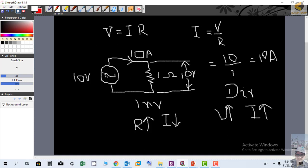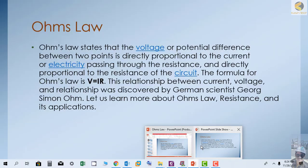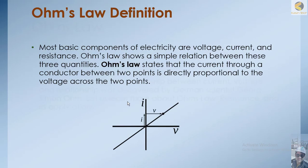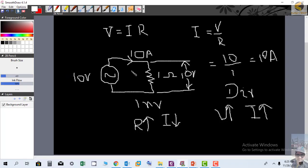This is the basic concept of Ohm's law. In the next section, we will study series and parallel circuits. The most basic components of electricity are voltage, current, and resistance. Ohm's law shows a simple relationship between these three quantities. Ohm's law states that the current through a conductor between two points is directly proportional to the voltage across the two points.